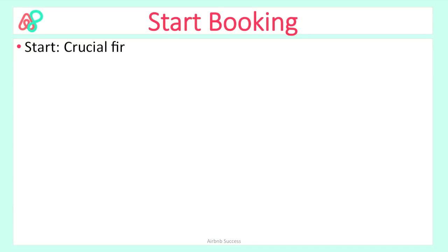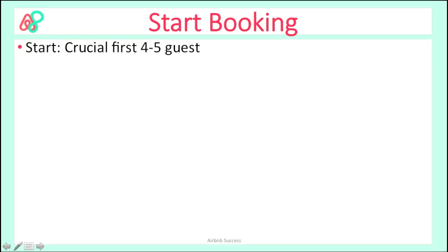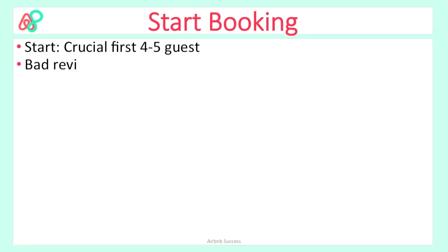For the start of the booking, this is the crucial part. The crucial part is the starting. When you start with the first four to five guests, you've got to give them the most attention ever. See, they are the first golden eggs that you get. You've got to treat them like kings and queens and prepare your place fabulously for their arrival, so you can expect to get a good review. Because if they give you a bad review in the first two to three guests, that's not going to turn out very good — you will receive no more guests after that.